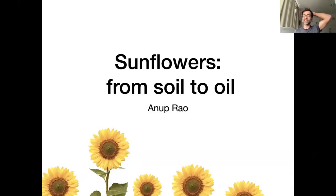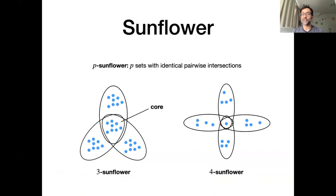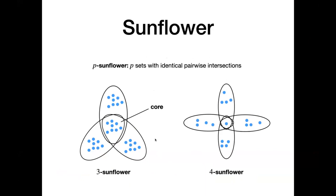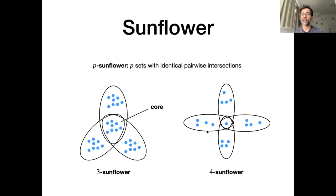What I want to tell you about today is this beautiful line of work concerning sunflowers. It has had an immense amount of applications in many seemingly unrelated areas. A sunflower is a very simple combinatorial object — it's a collection of sets where every pair of sets has exactly the same intersection. Here we see three sets forming a sunflower, and on the right, four sets with the same pairwise intersections.